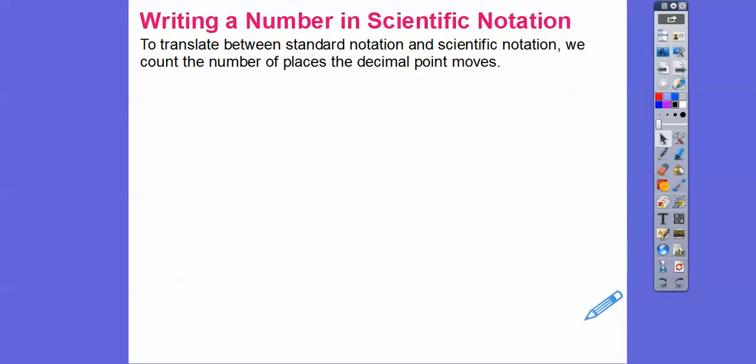Anyway, this book doesn't make as many mistakes as my integrated math books do. They make several mistakes, and it's frustrating because you spend sometimes up to 20 or 30 minutes trying to figure out if you made a mistake or the book made a mistake. But so far I haven't really found mistakes in your Go Math books, so that's good. To translate between standard notation and scientific notation, we just count the number of decimal places that are moved.